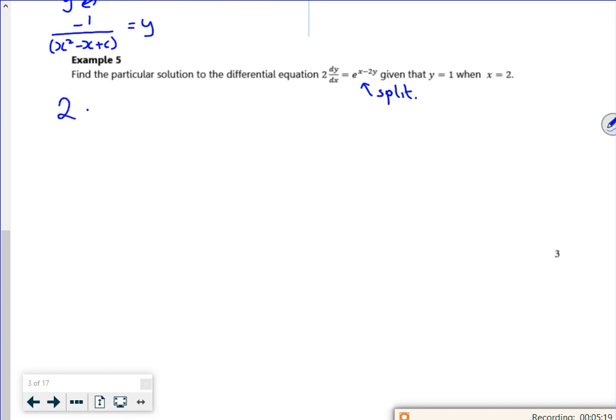So I've got 2 dy dx. I'm using my log laws, e laws, power laws. It's e to the x times by e to the minus 2y. Now e to the minus 2y is 1 over e to the 2y. Makes it a little bit easier for the next step. So I've got e to the x divided by e to the 2y. So now I'm going to take my y's over to the left. So I've got 2 e to the 2y dy is e to the x dx.